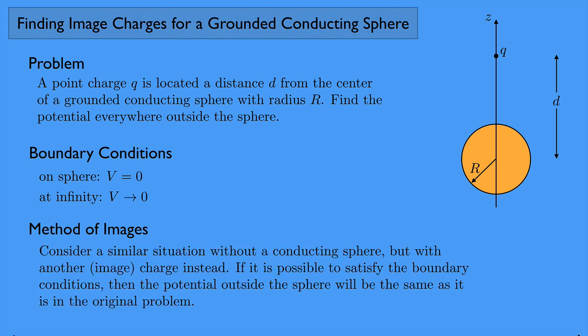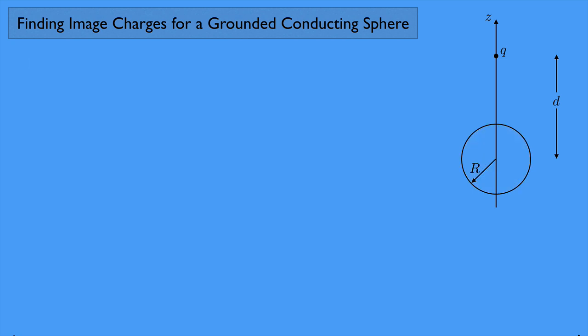We're going to use the method of images. Instead of having our grounded conducting sphere, we're going to consider a situation where there's no sphere, but instead there's another image charge. If it's possible to satisfy the boundary conditions, then the potential outside the sphere will be the same as in the original problem. So we get rid of the conducting sphere and replace it with another charge — I'll call it big Q — at a distance A from the center. The goal is to figure out what A and big Q have to be in order to mimic the boundary conditions.